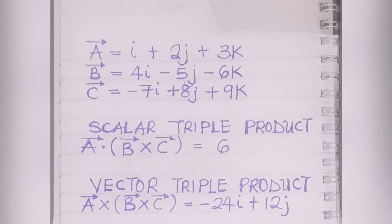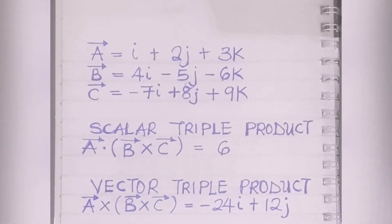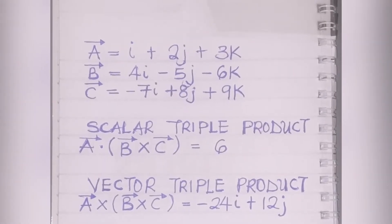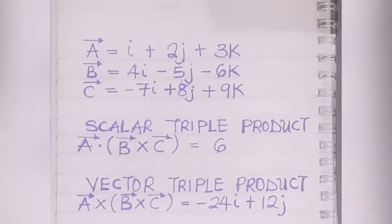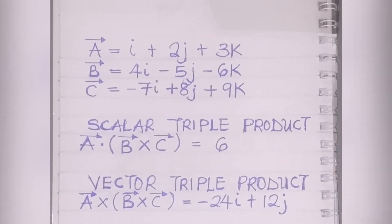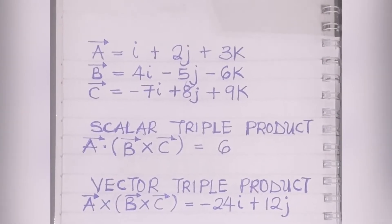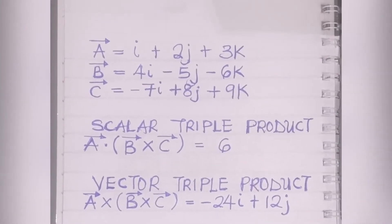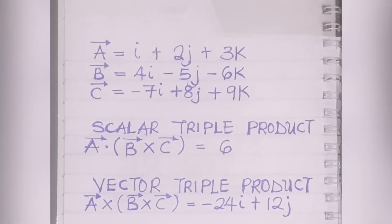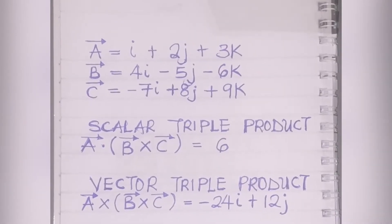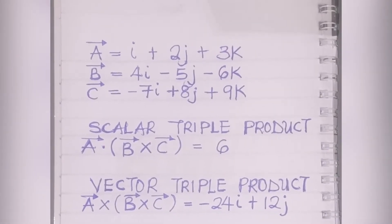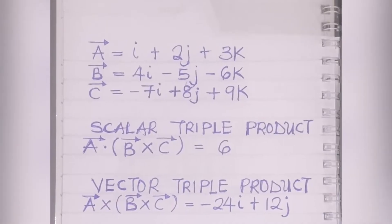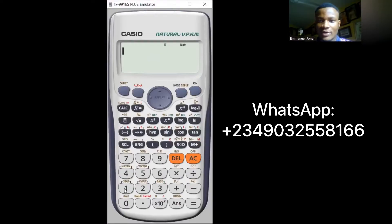Our vector triple product A×(B×C) is equal to -24i + 12j. This work has already been done in our previous classes — check the description of this video for the links. Now let's head over to the calculator and confirm these answers.